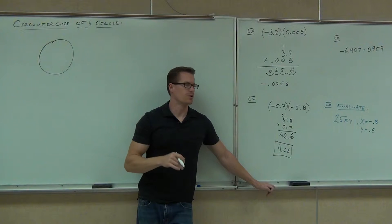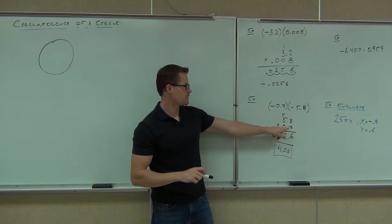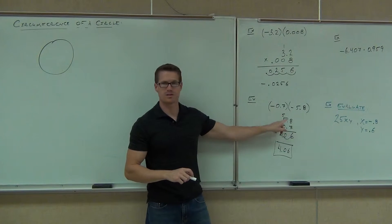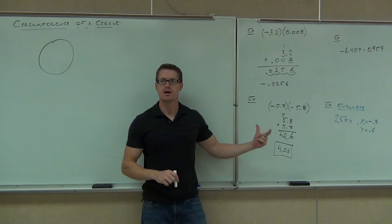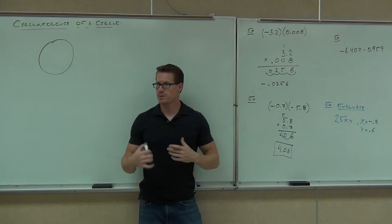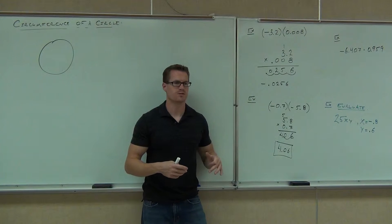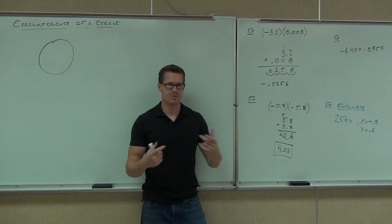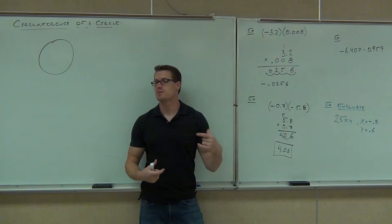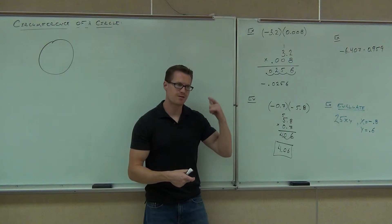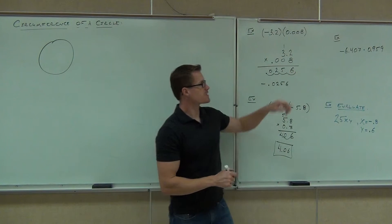If you didn't get 4.06, what happened? Was it the actual multiplication, or was it the sign? If it's the sign, check out the multiplication rule again. A positive times a positive is positive. Positive times a negative, no matter which order, is negative. Negative times a negative is always positive. Those rules still work for our decimals.